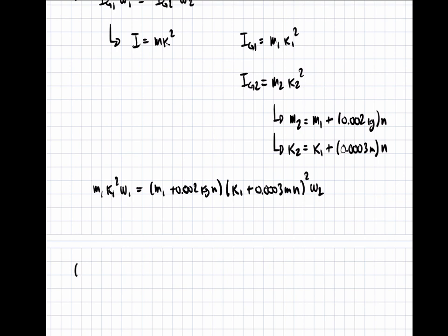So by plugging in all the values, we get that 0.4 kilograms times 0.12 meters all squared times 5 radians per second equals (0.4 kilograms plus 0.002 kilograms times n) times (0.12 meters plus 0.0003 meters times n) all squared times 2.1 radians per second.